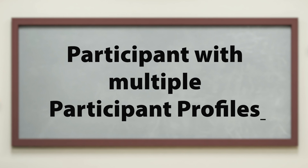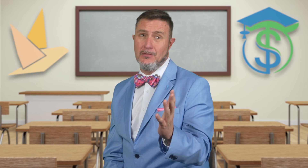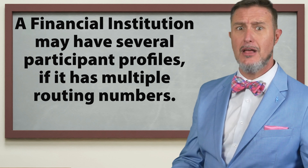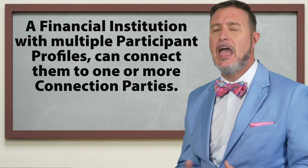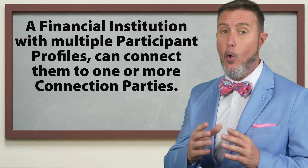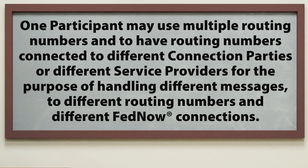Finally, a participant with multiple participant profiles. This one's pretty unusual, but it does happen, and it's pretty easy too. A financial institution may have several participant profiles if it has several routing numbers. With multiple routing numbers, you'll have multiple profiles set up within the FedNow service. A financial institution with several participant profiles can connect them to one or more connection parties, and connect each routing number to a different party if you want, or each routing number to one party — up to you. It is possible for one participant to use multiple routing numbers connected to different connection parties or different service providers for handling different messages. Most people are just going to be one.